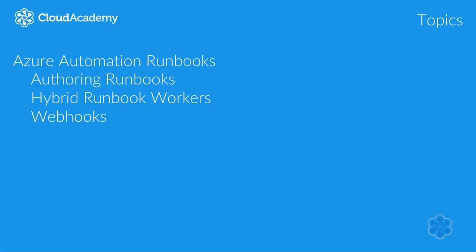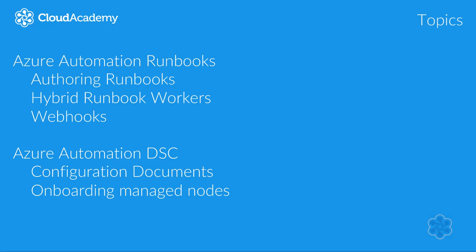The topics that we'll cover in this course include, for Azure Automation runbooks: authoring runbooks, hybrid runbook workers, and webhooks. For Azure Automation Desired State Configuration pull server, you'll want to understand configuration documents and how to onboard managed nodes.